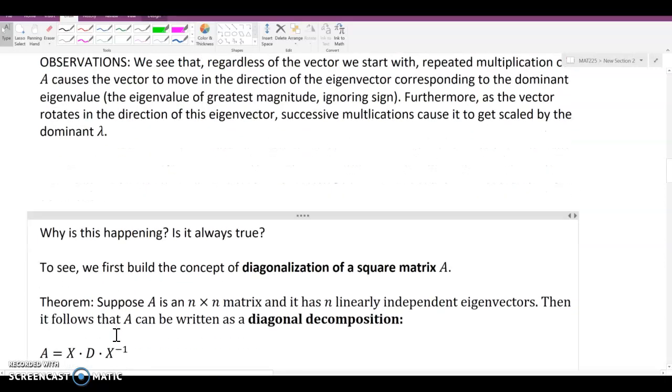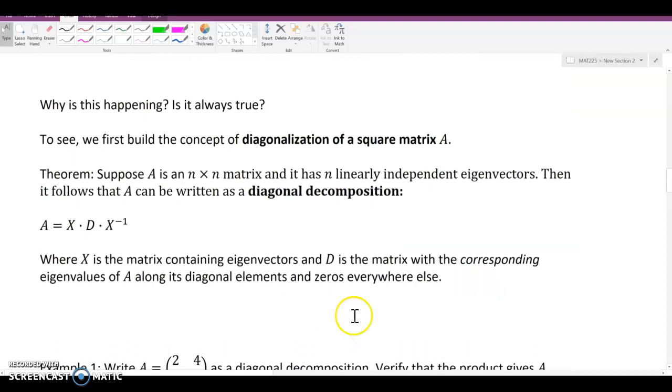So why is this happening, and is it always true? So we'll get back at this in the next lesson. But to see, we first build the concept of diagonalization of a square matrix A. So here's the theorem. Suppose A is an n by n matrix, and it has n linearly independent eigenvectors. So this is not always true that it does, but we're going to only focus on that fact.